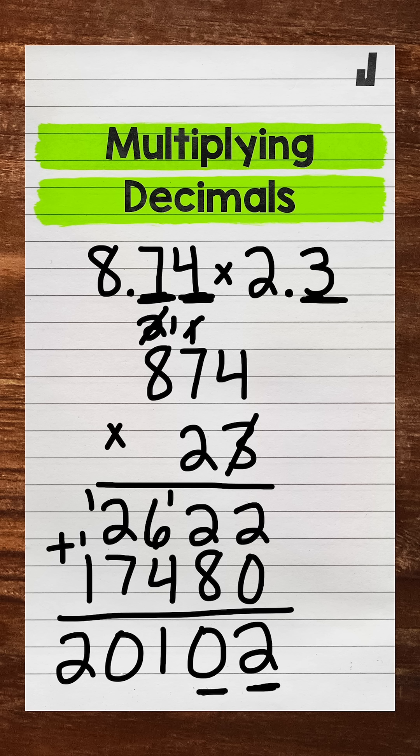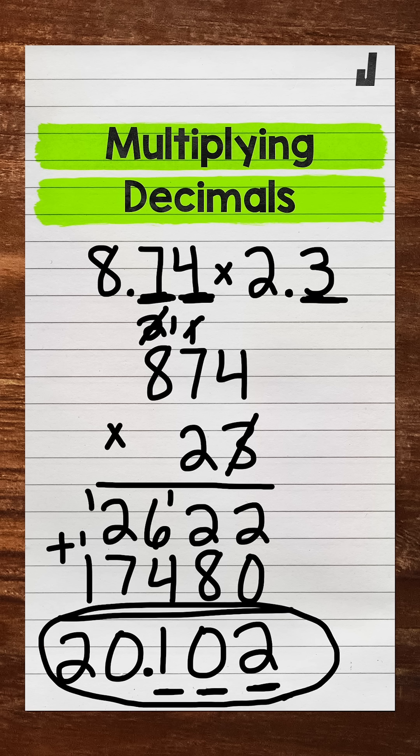1, 2, 3. So the decimal goes in between that 0 and the 1. And this is our final answer, 20 and 102 thousandths.